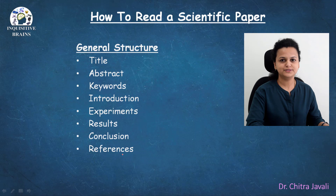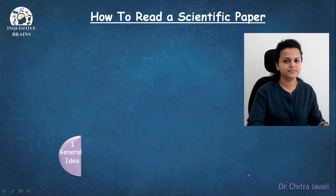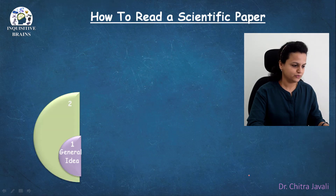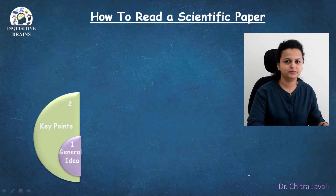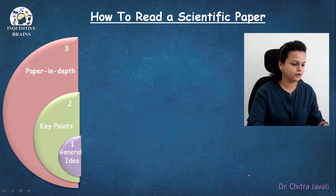Now I will introduce you to three easy steps of how to read a scientific paper. Step 1 consists of getting a general idea — an overview of the paper. Step 2 is for grasping the key points of the paper. And in Step 3, you'll be knowing the paper in detail. Let's see what these three steps consist of.